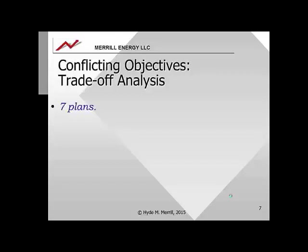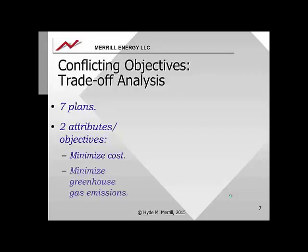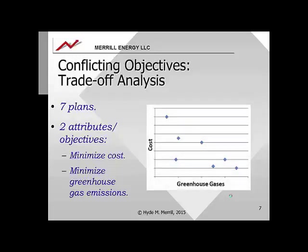Consider a problem with seven plans and two attributes or objectives: cost, where the objective is to minimize cost, and greenhouse gas emissions, where the objective is to minimize greenhouse gas emissions. The values of cost and greenhouse gas emissions for each of the seven plans can be plotted on a two-dimensional axis — vertical axis is cost, horizontal axis is greenhouse gas — and each plan is represented by a point in this space.